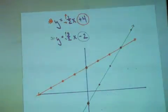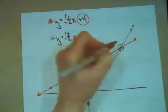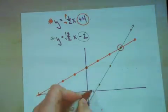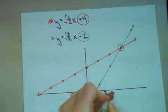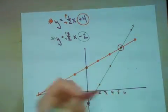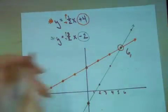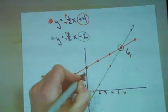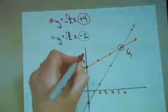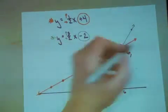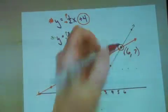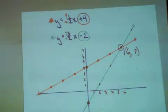And now we need to identify this point of intersection. 1, 2, 3, 4, 5, 6 to the right. And 1, 2, 3, 4, 5, 6, 7 up. So apparently that is at the coordinate pair 6, 7.